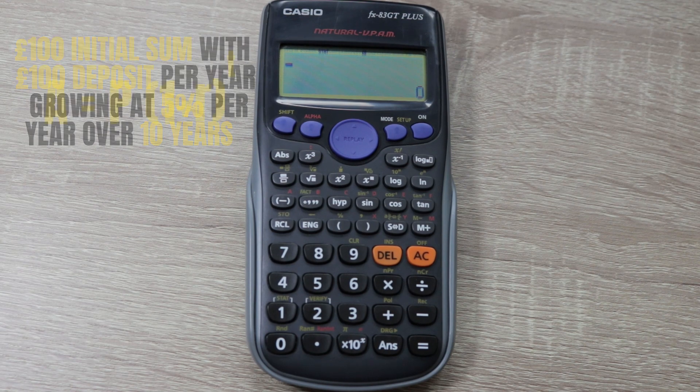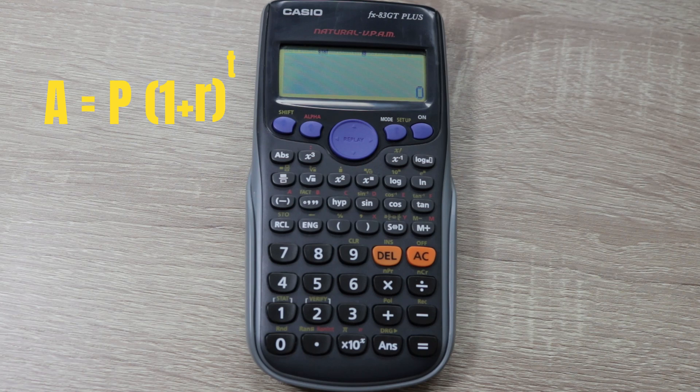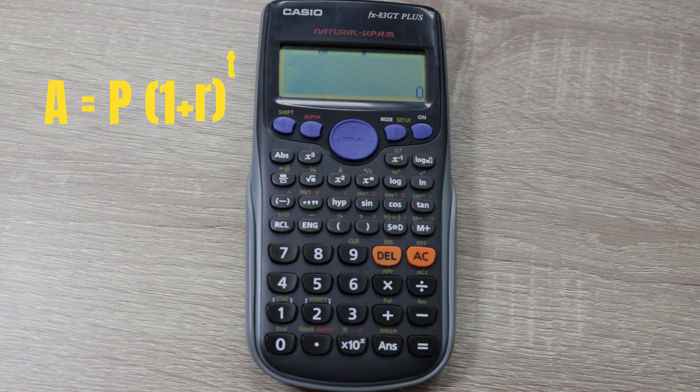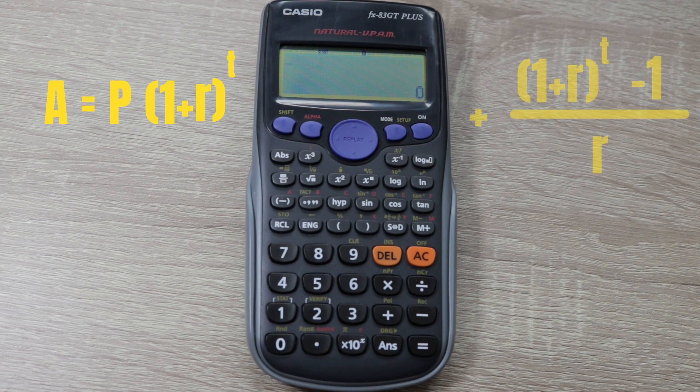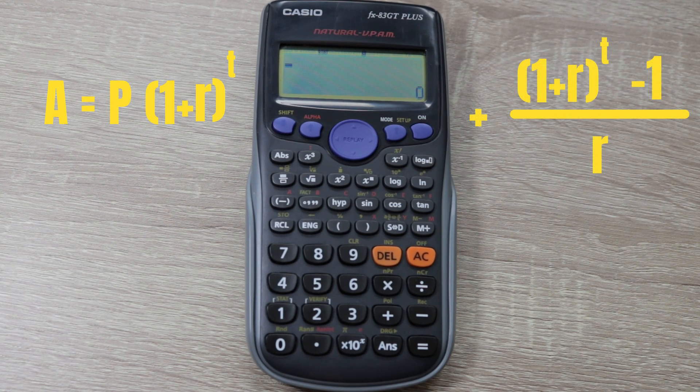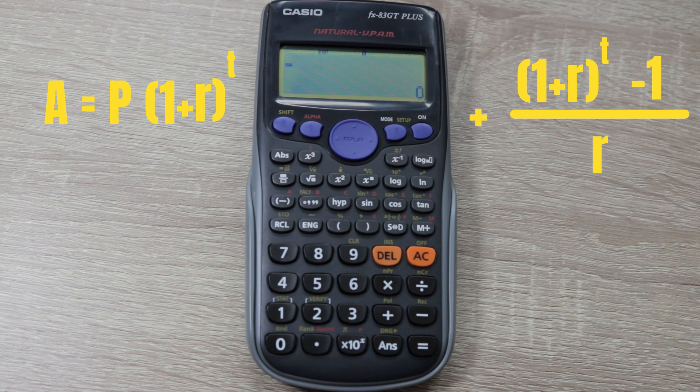The formula for that is A equals P, then 1 plus R, and T is our period of time, 10 years. Then we add a second part to this formula: 1 plus R to the power of T, minus 1, over R. We'll do the right-hand side first, so we'll do what's in the brackets.